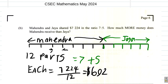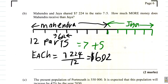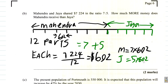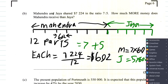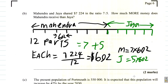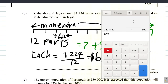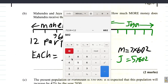So for example, each individual segment on our diagram is worth $602. Mahendra has 7 of those parts, so Mahendra's amount is 7 times 602. And Jaya's amount is 5 times 602. That's how the calculation is done.